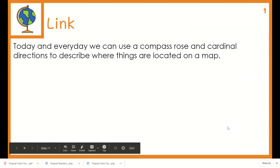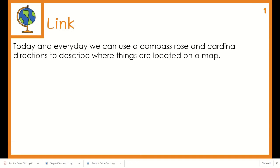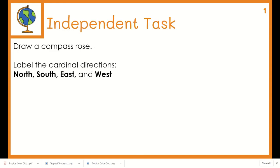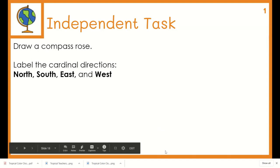Today and every day we can use a compass rose and cardinal directions to describe where things are located on a map. Draw a compass rose and label the cardinal directions: north, south, east, and west.